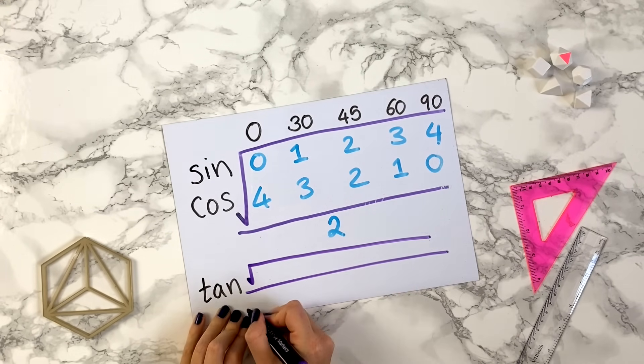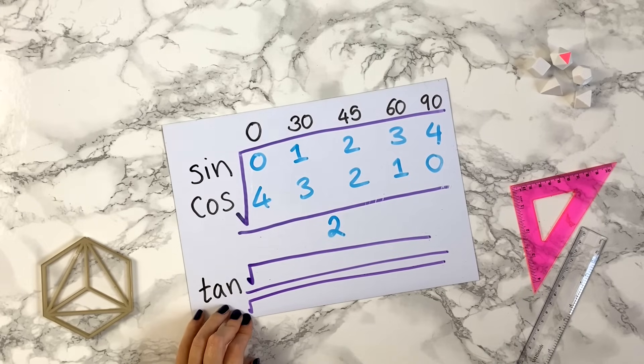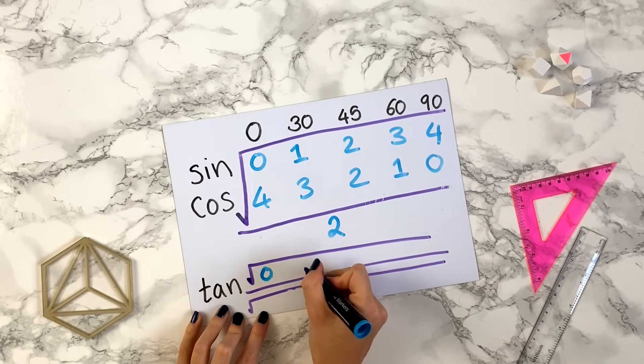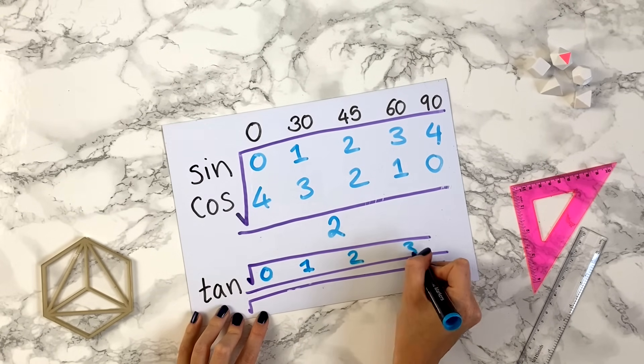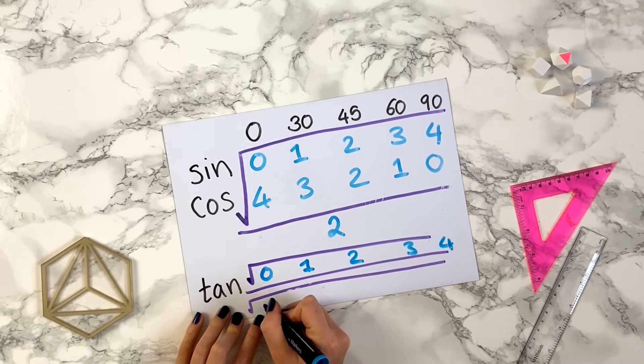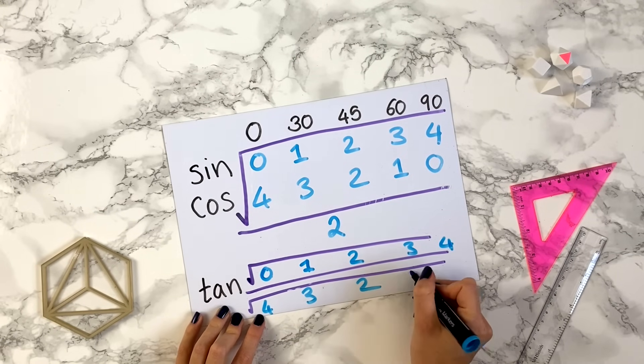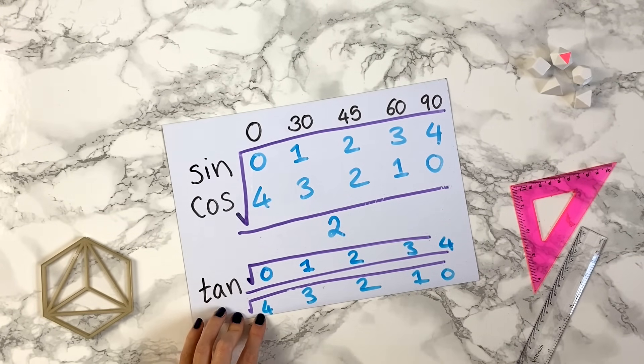At the bottom you can write tan, and then you do a big square root sign, a divide sign, and another big square root sign underneath it. Then you write on the top 0, 1, 2, 3, 4, and below you write 4, 3, 2, 1, 0, the reverse like we did up there.